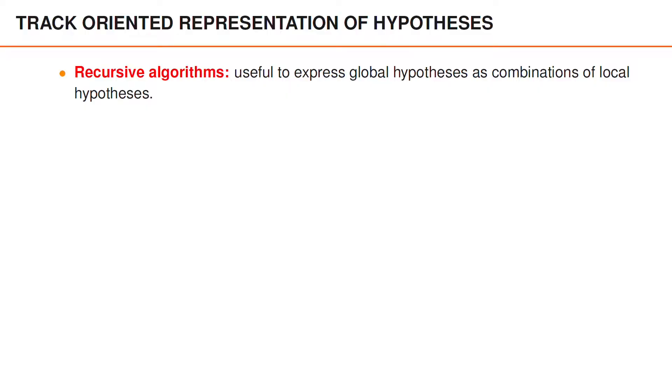The way we previously described the global hypotheses in a PMBM filter for extended objects is useful for understanding how many hypotheses we have. However, in our recursive filters, we normally have local tracks, here represented by a potential object and its local hypotheses, that we propagate over time.